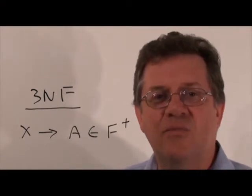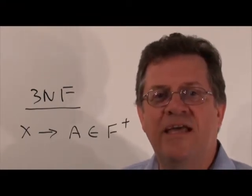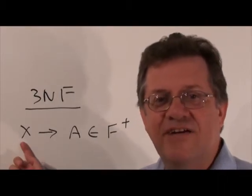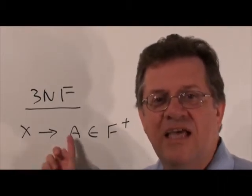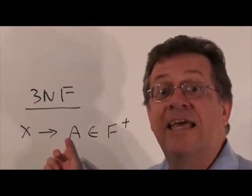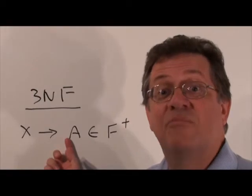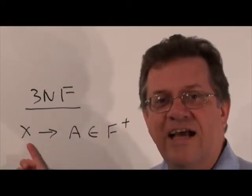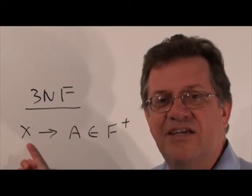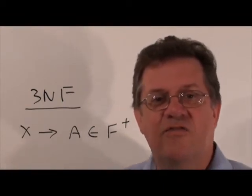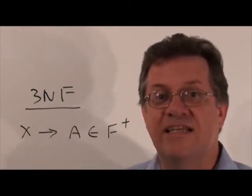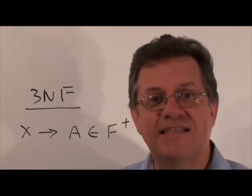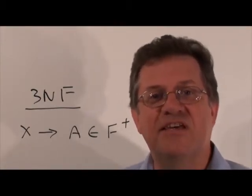A relation is in Third Normal Form if for every functional dependency, where X is on the left-hand side (a set of attributes) and A is on the right-hand side and is non-prime and a member of F-closure, then X has to be a super key. So for every functional dependency where the right-hand side is non-prime, the left-hand side has to be a super key.